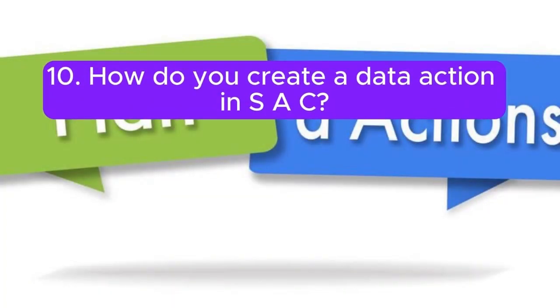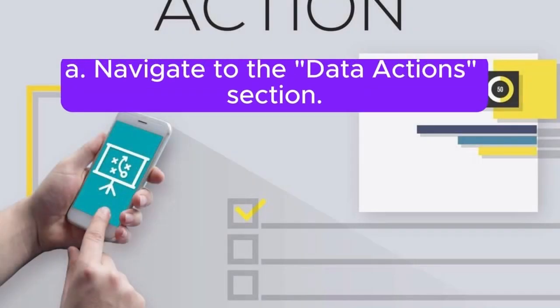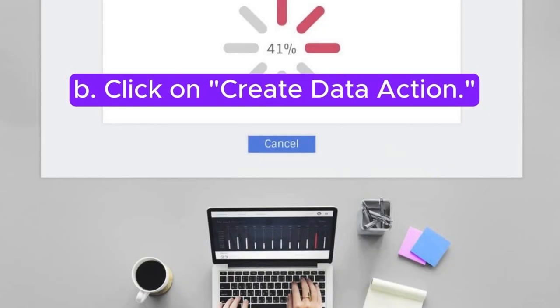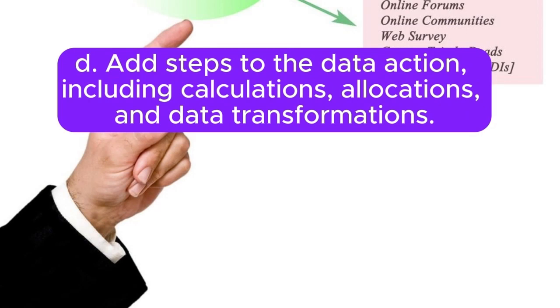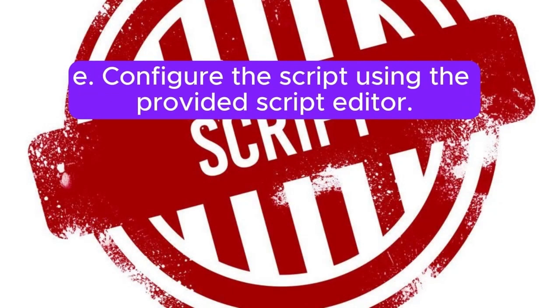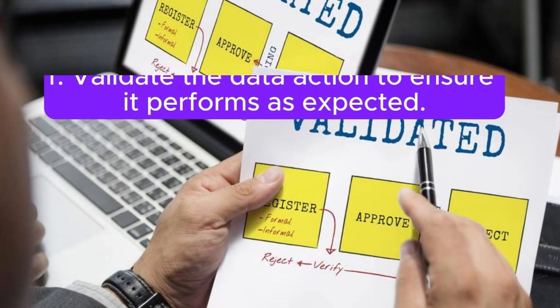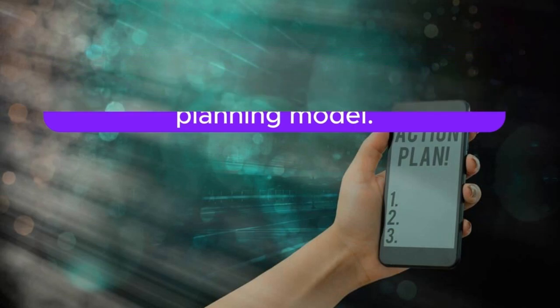Question 10: How do you create a data action in SAC? Answer: To create a data action in SAC: A. Navigate to the Data Actions section. B. Click on Create Data Action. C. Define the parameters, such as target model, version, and time period. D. Add steps to the data action, including calculations, allocations, and data transformations. E. Configure the script using the provided script editor. F. Validate the data action to ensure it performs as expected. G. Save and execute the data action to apply the changes to your planning model.